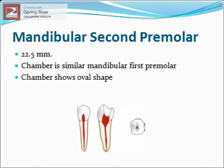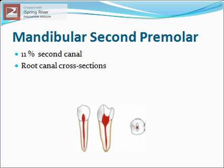Mandibular second premolar: the average length is about 22.5 mm. The pulp chamber is similar to that of the mandibular first premolar; in cross section the pulp chamber shows an oval shape. The mandibular second premolar usually has one root and one canal, but in 11 percent of cases a second canal can be seen. Root canal cross sections tend to be oval coronally and round apically.